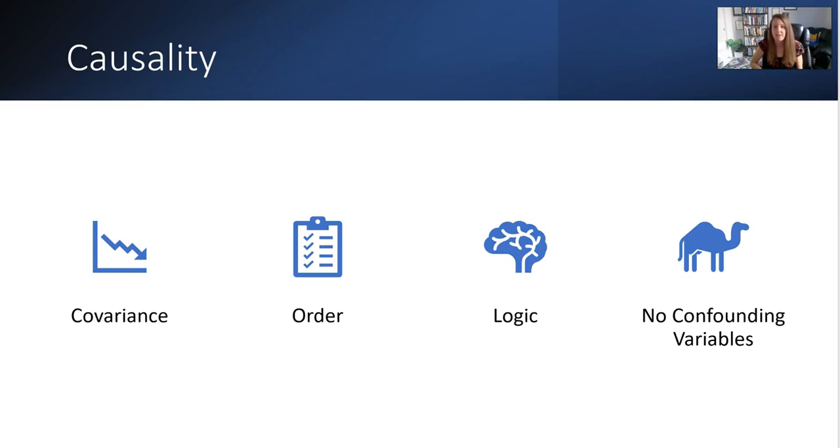For covariance, that means that the two variables change at the same rate. So in our refugee example, is there a direct connection that every time you learn even one more word of English you become less anxious?